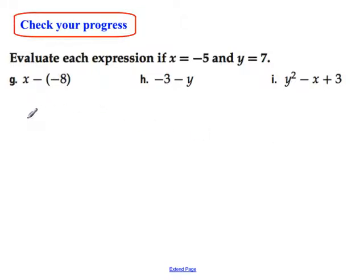I hope you took some time to do that. This time we have x minus a minus 8, which is the same as x plus 8. So now instead of x, I'm going to put in the value for x, which is negative 5. So I have negative 5 plus 8, and that gives us an answer of positive 3.